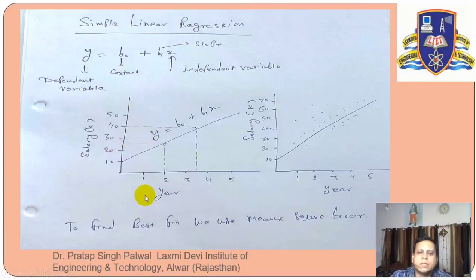Let's understand a simple example. As a person's years of experience increases in any company, our salary increases. If I talk about 2 years of experience, our salary is near about 25,000. And this is our slope, which means y equal to b0 plus b1 x.